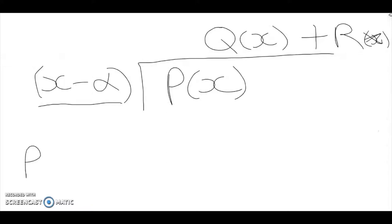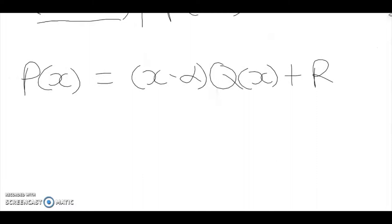So by this long division process, this polynomial will be equal to our divisor multiplied by the quotient plus the remainder. Now how do we know that this divisor (x - α) is a factor of the polynomial?